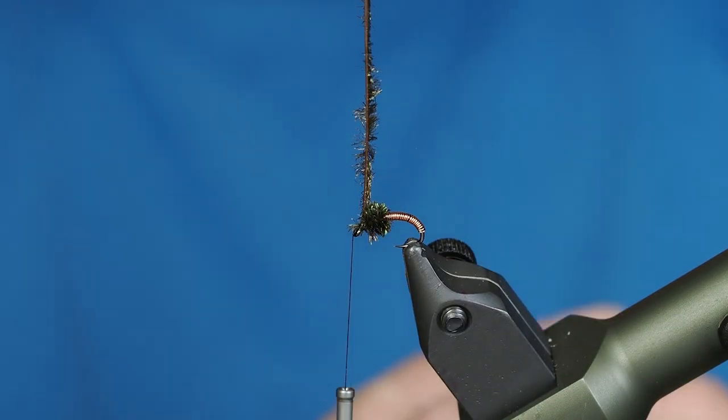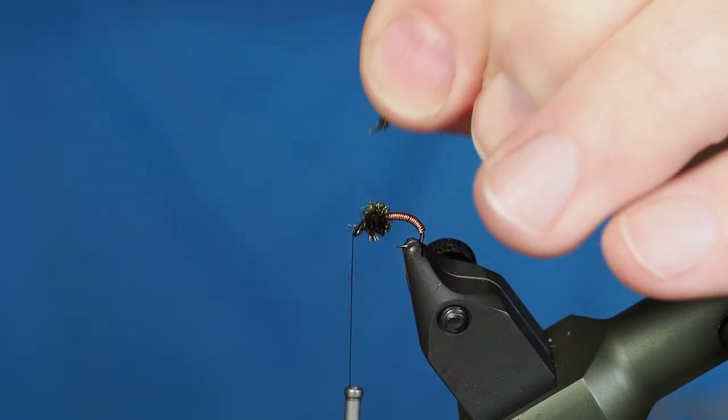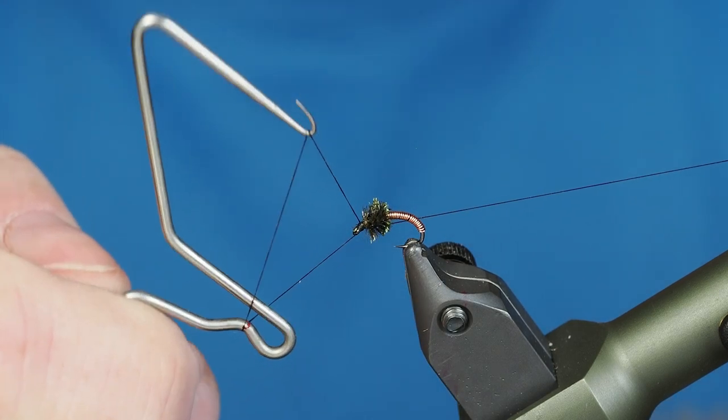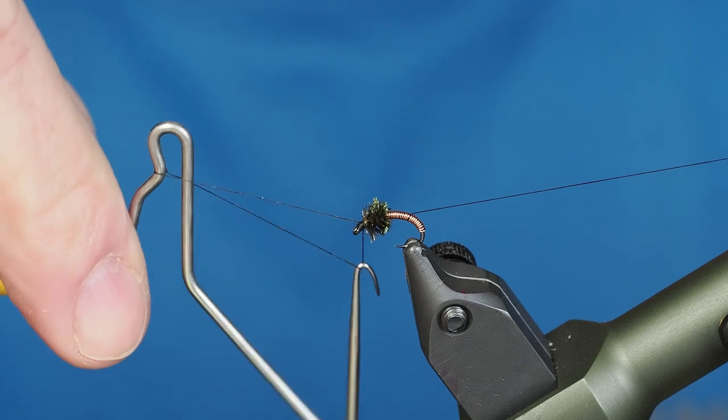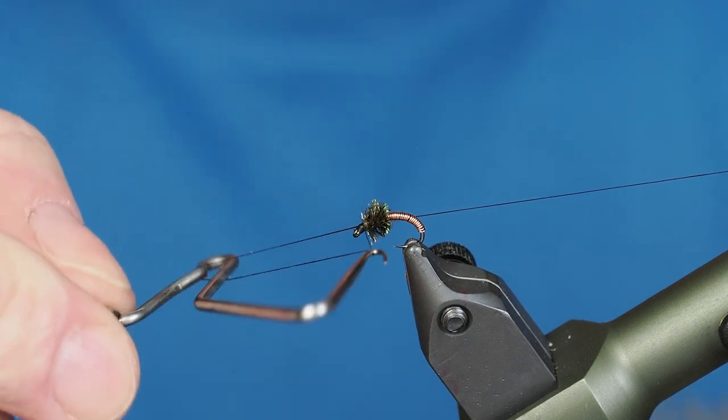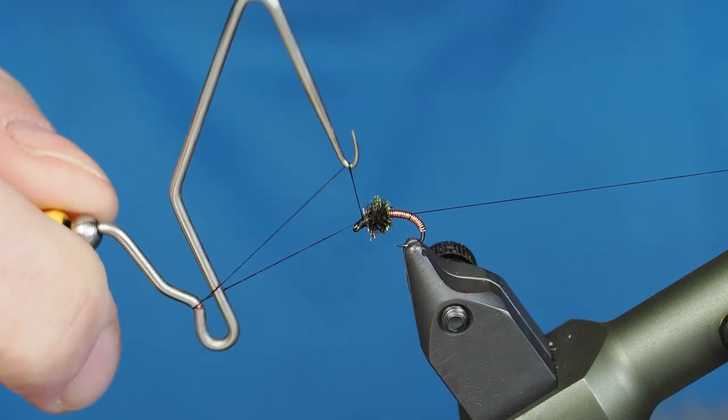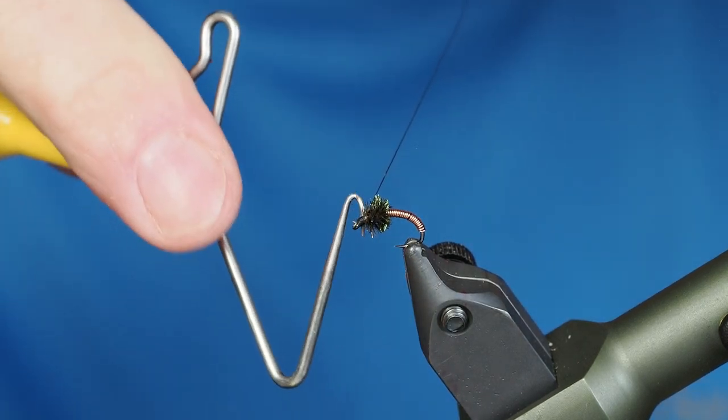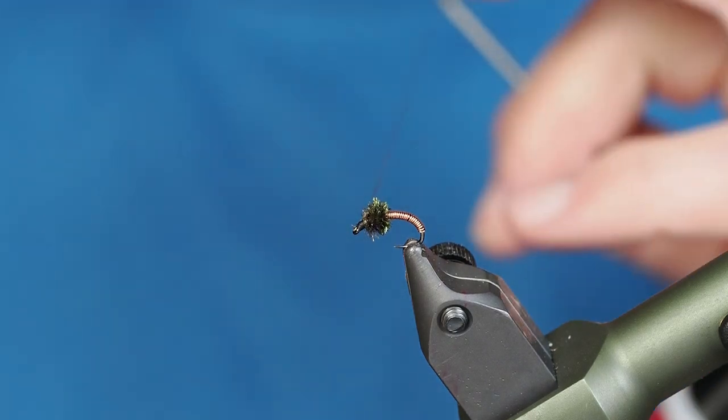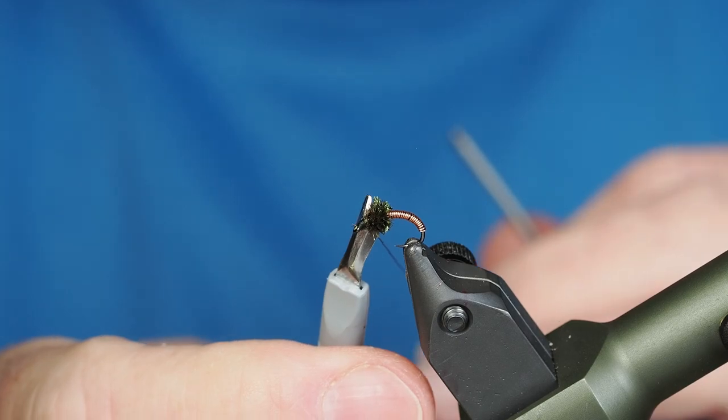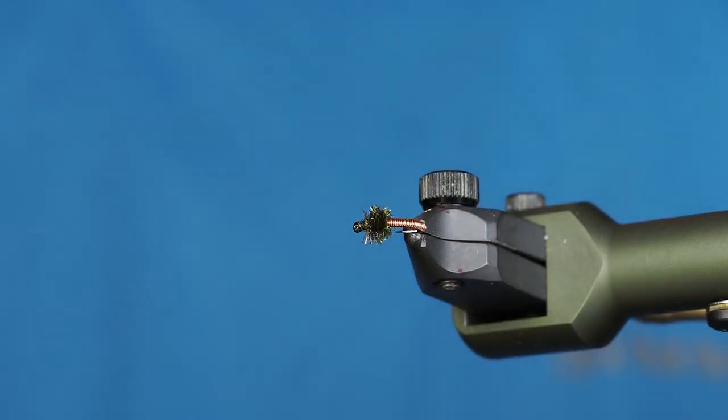So now we'll just go ahead and whip finish, taking most of these whip finish wraps more towards the back than towards the eye. Go ahead and release that from our whip finisher and remove our thread. And with that, we're finished with our Brassy.